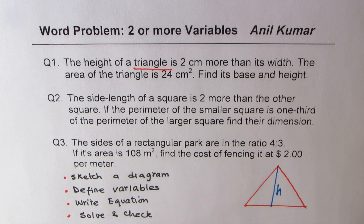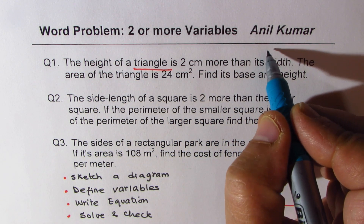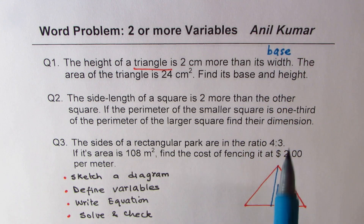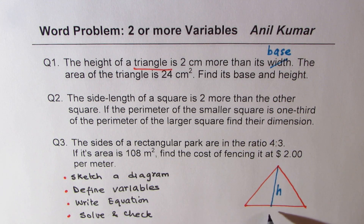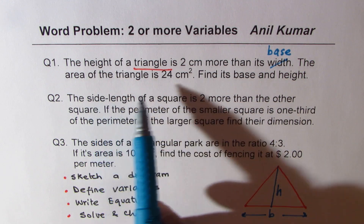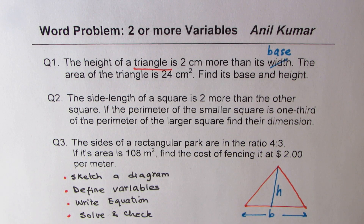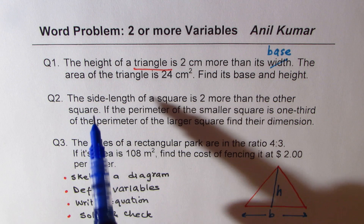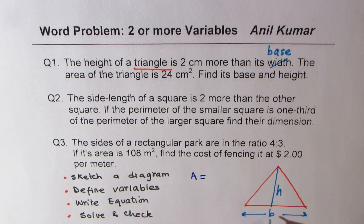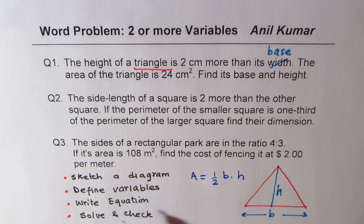Define the variable. The height of a triangle is two centimeters more than its width. The width has been used as base here — I should not have used the word width; it should have been base. So we'll call this the base. The area of the triangle is 24 centimeters squared. So we sketch and define variables, then write an equation. We know area, so we'll write area A equals half base times height. That is step number three.